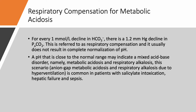What about respiratory compensation for metabolic acidosis? For every 1 mmol/L decline in bicarb, there is a 1.2 mmHg decline in PaCO2. So if normal bicarb of 24 drops to 14, that's a drop of 10 — times 1.2 equals 12 — so PaCO2 should drop from 40 to 28. This is respiratory compensation, but it should not fully normalize pH. If pH is entirely normal, you probably have metabolic acidosis plus respiratory alkalosis, a scenario seen in salicylate intoxication, hepatic failure, and sepsis. In the next lecture, we'll discuss the pathophysiology of metabolic acidosis.